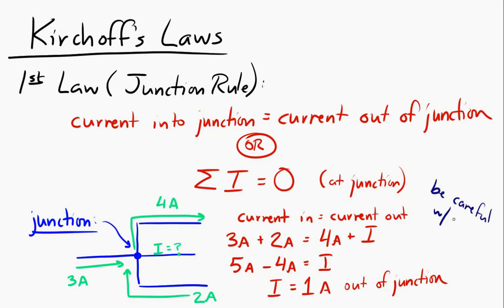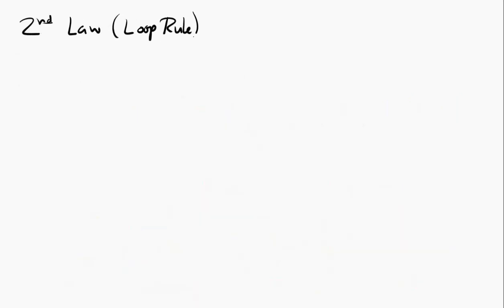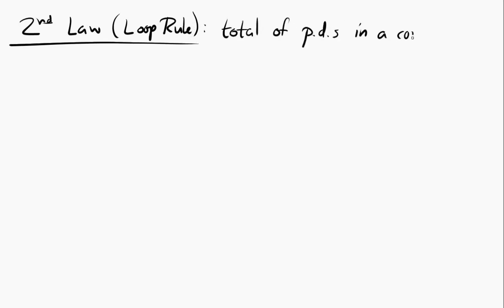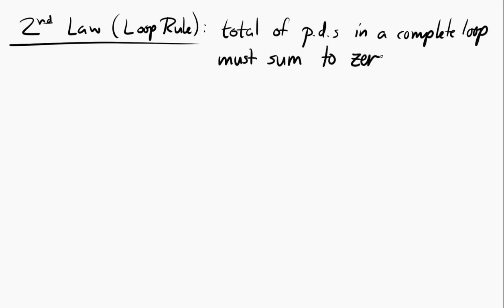The second law is also called the loop rule, and it states that the total of the potential differences in any complete loop has to be zero. This can be applied to any loop in any circuit. When solving problems, sometimes it will be obvious which loop to choose, and sometimes it won't — and that's part of the art of solving these problems.